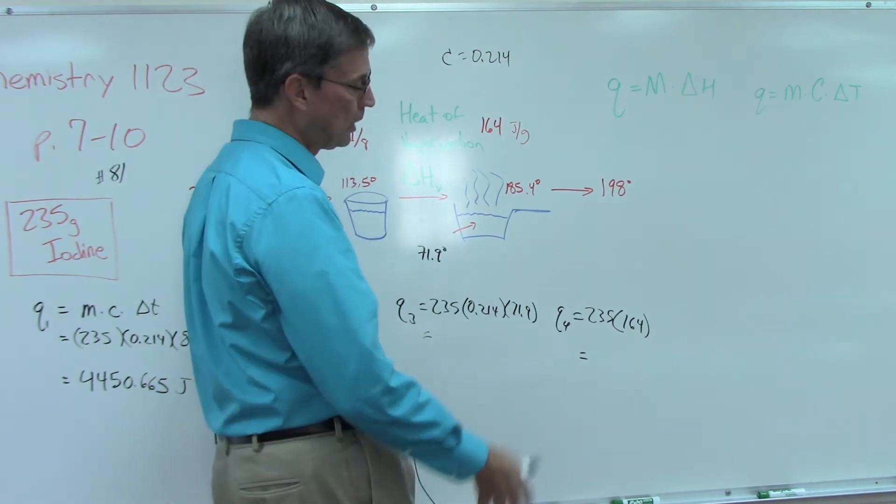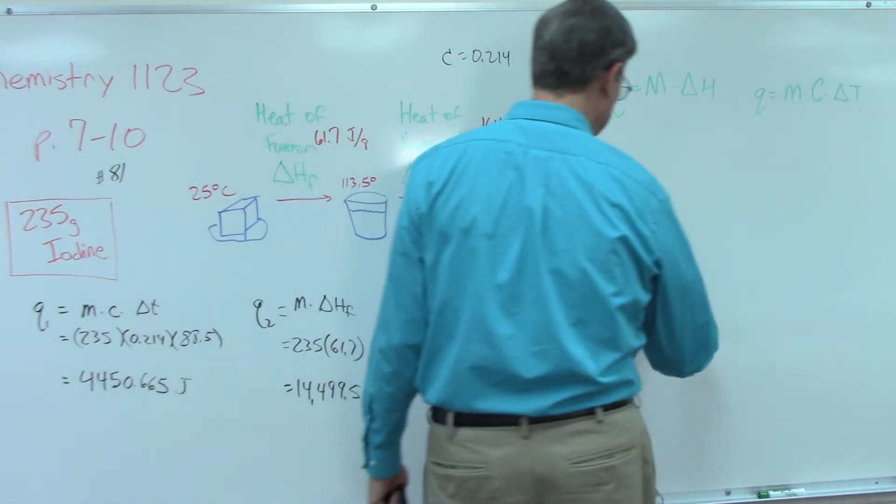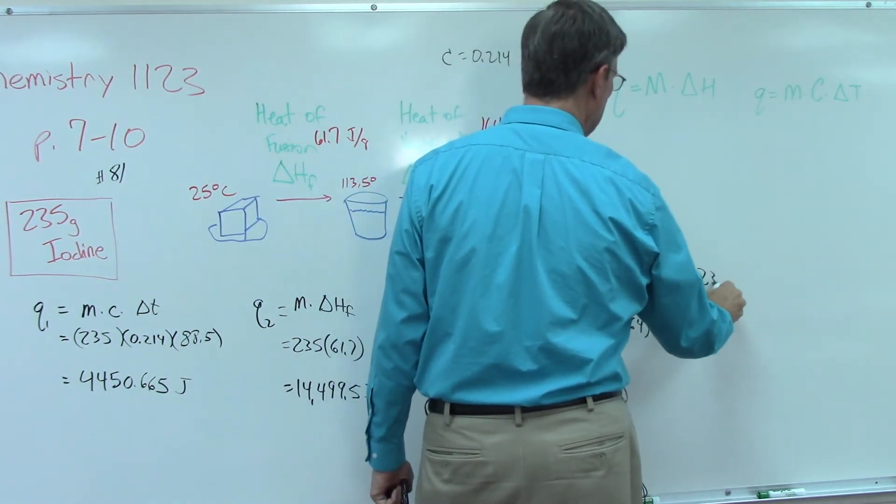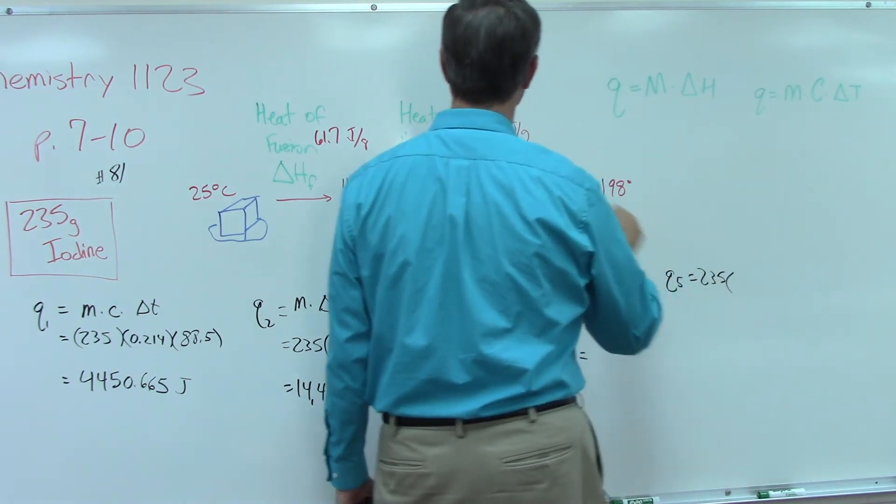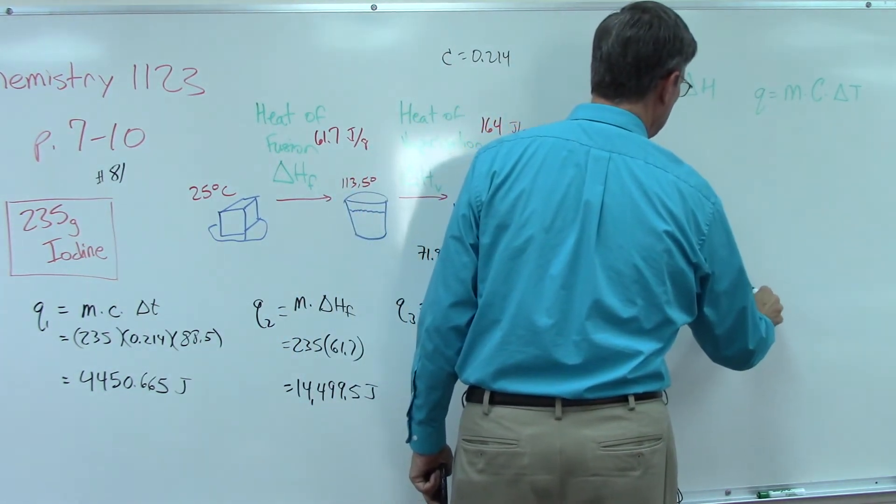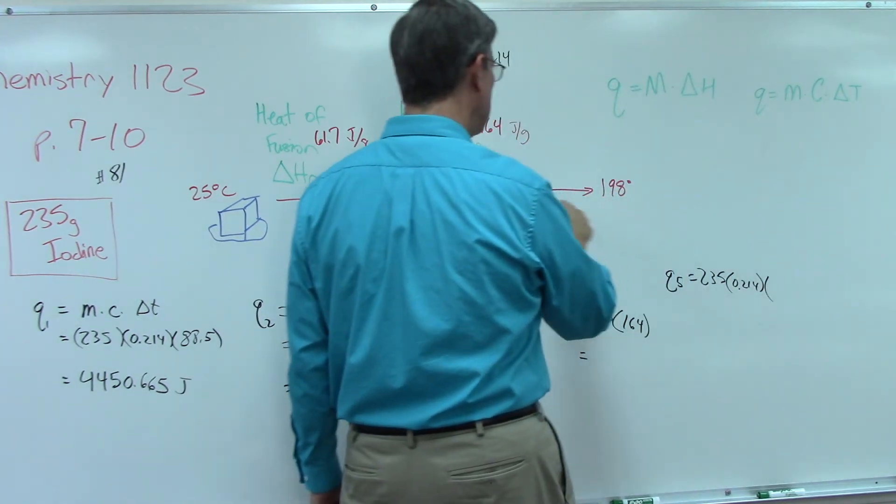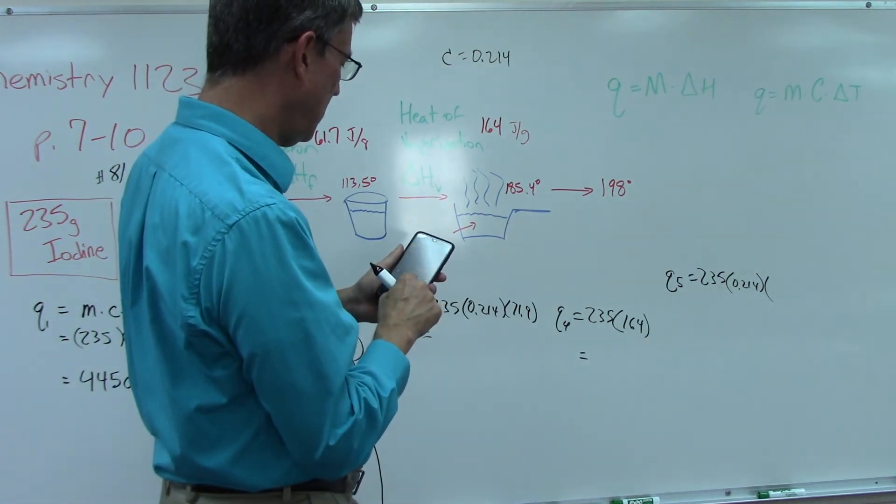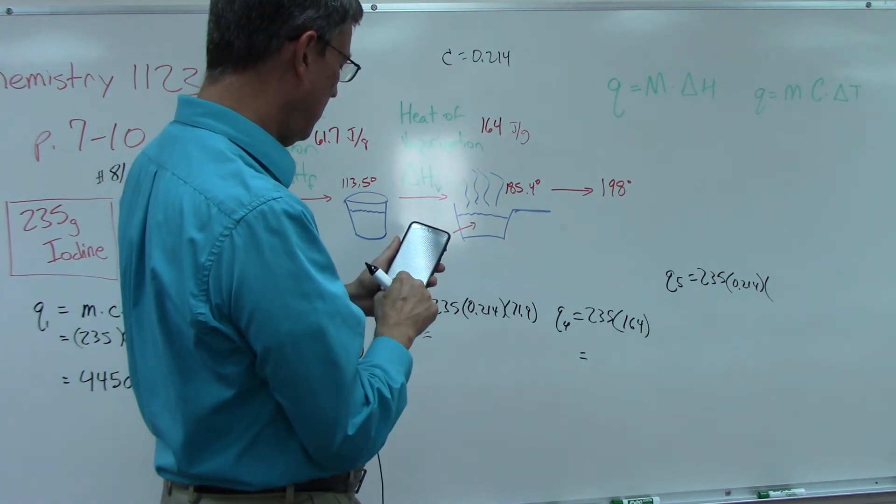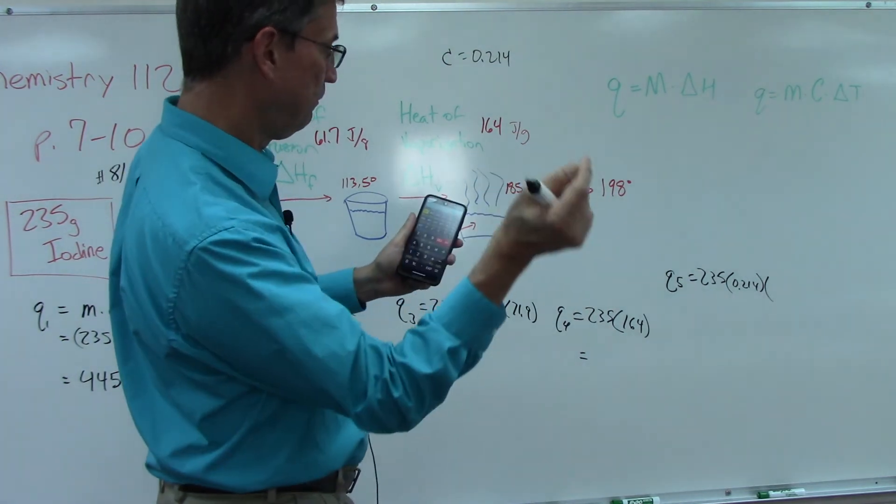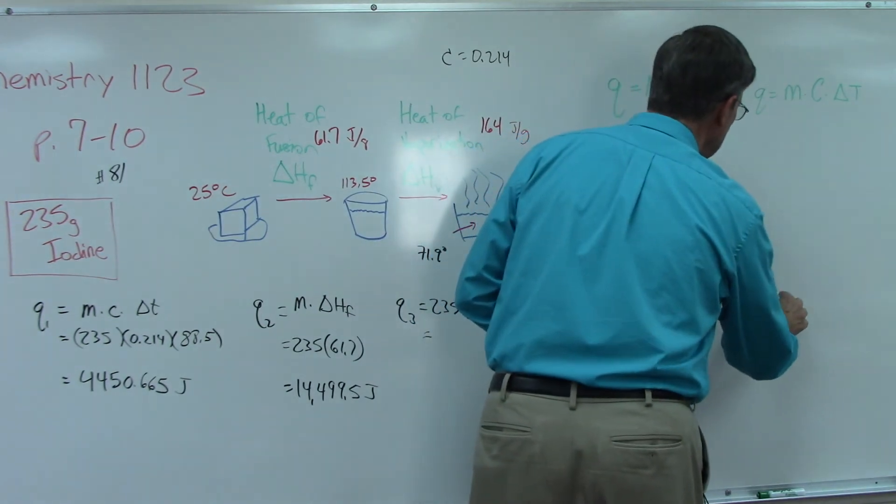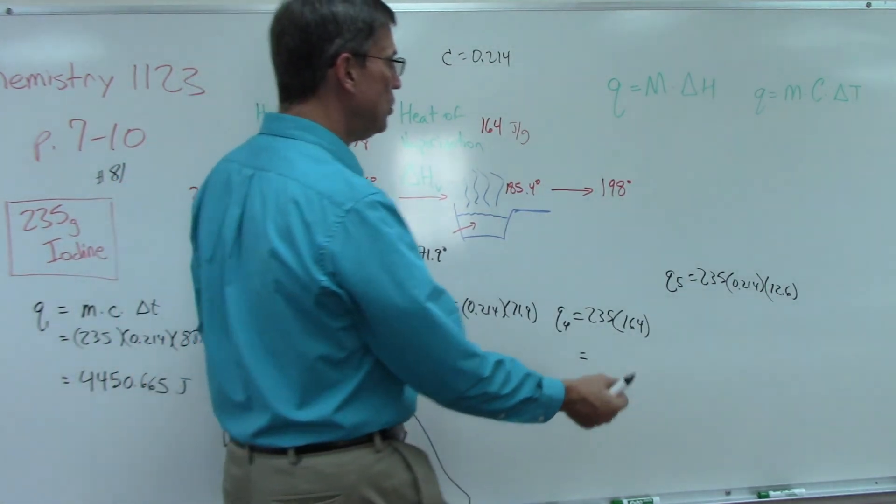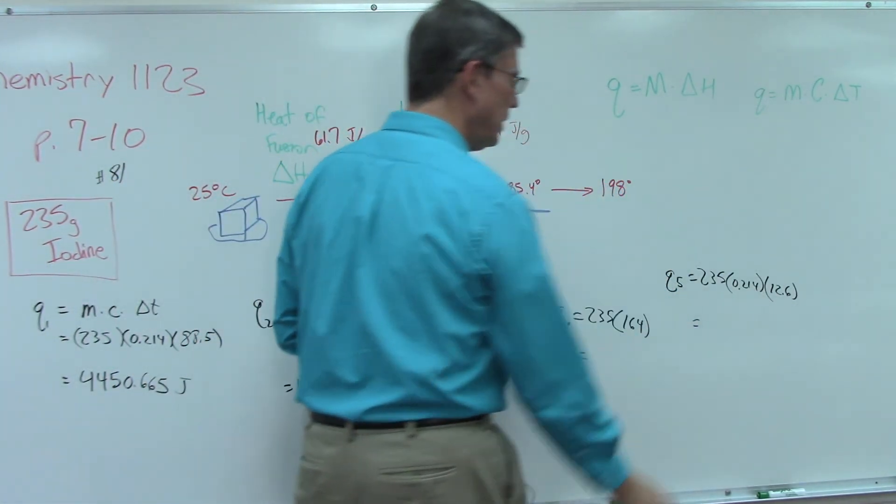Last step here we go. Q5, we're going to use this formula again: 235, and the C value was 0.214. The change in temperature, we're going from 185.4 to 198, so we'll do 198 minus 185.4, which equals 12.6 degrees.